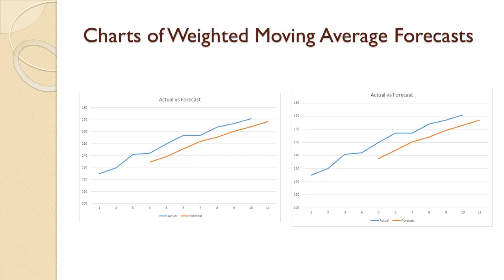This chart shows the two forecasts we produced in a prior video using weighted moving averages. As before, the demand data is in blue on both charts and the forecast is in orange. The chart on the left is for a three period forecast with weights of 0.20, 0.30, and 0.50. The chart on the right is for a four period forecast with weights of 0.10, 0.20, 0.30, and 0.40.